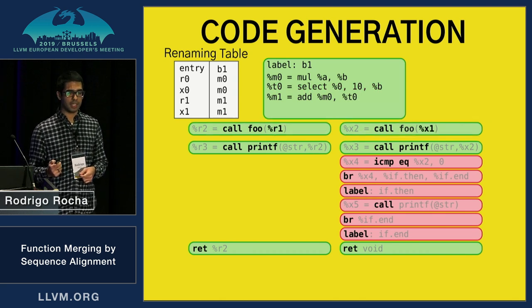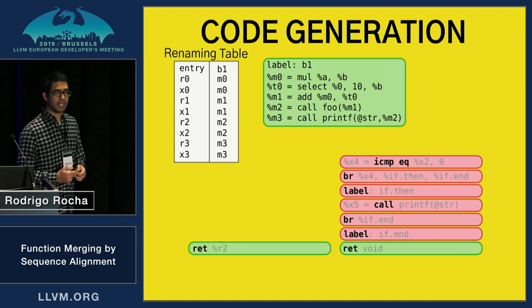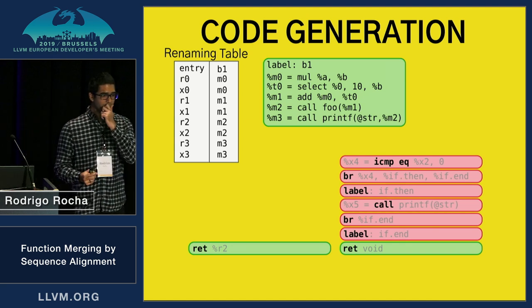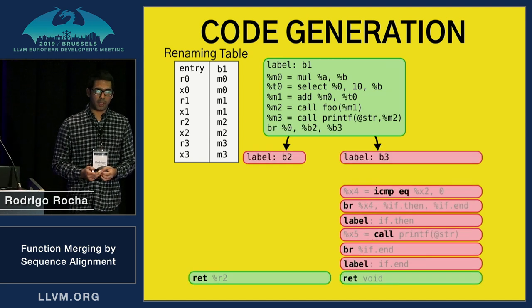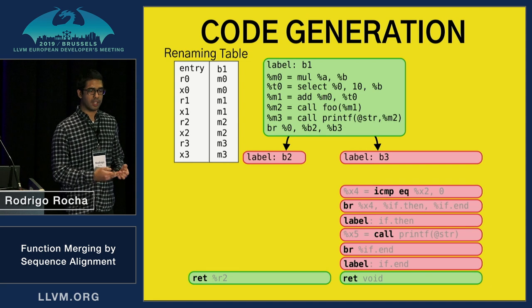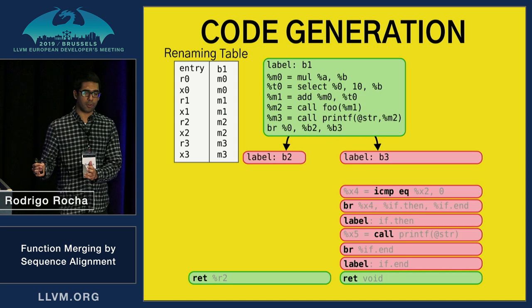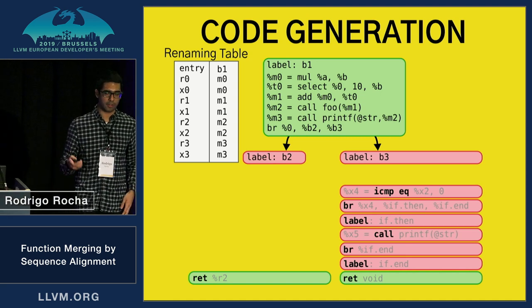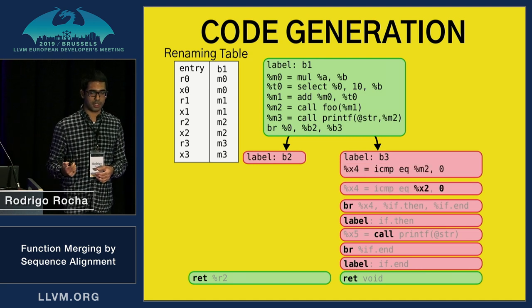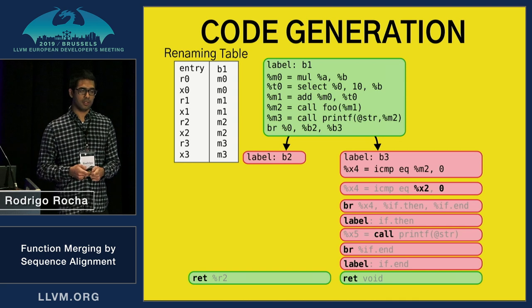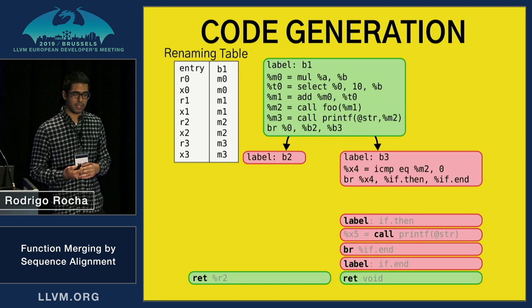We keep doing the same thing — again the operands are mapped to the same name. Now that we have a diverging point, we create a branch using the function identifier. We have a branch that corresponds to function one and another that corresponds to function two. All this non-mergeable code from function two will go into its own basic block B3, starting with this comparison. Again, we remap the operand to use the correct value.